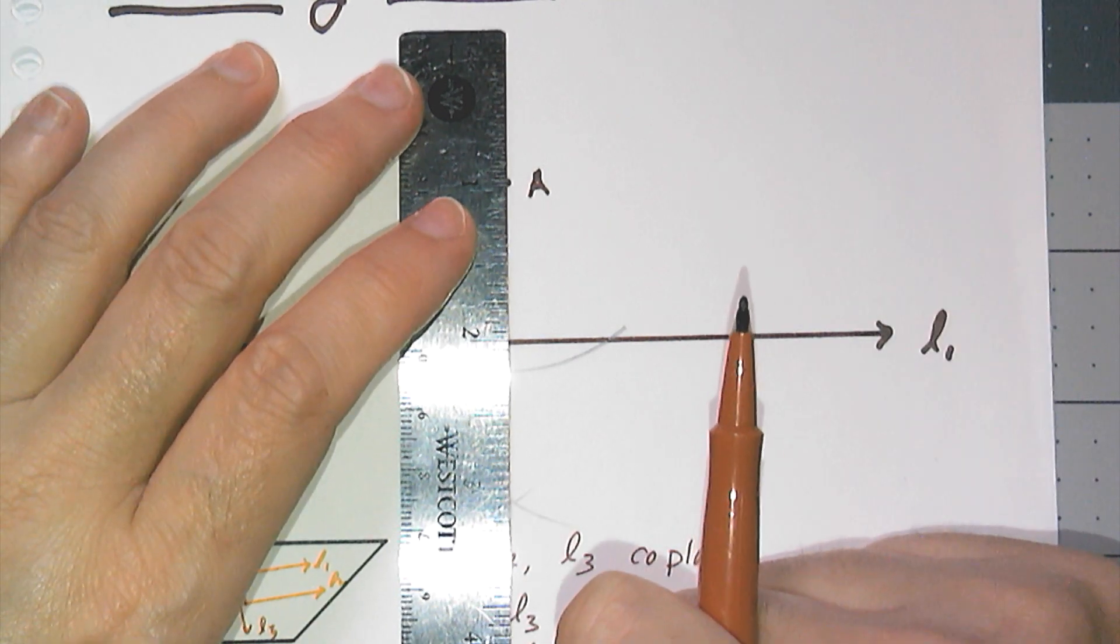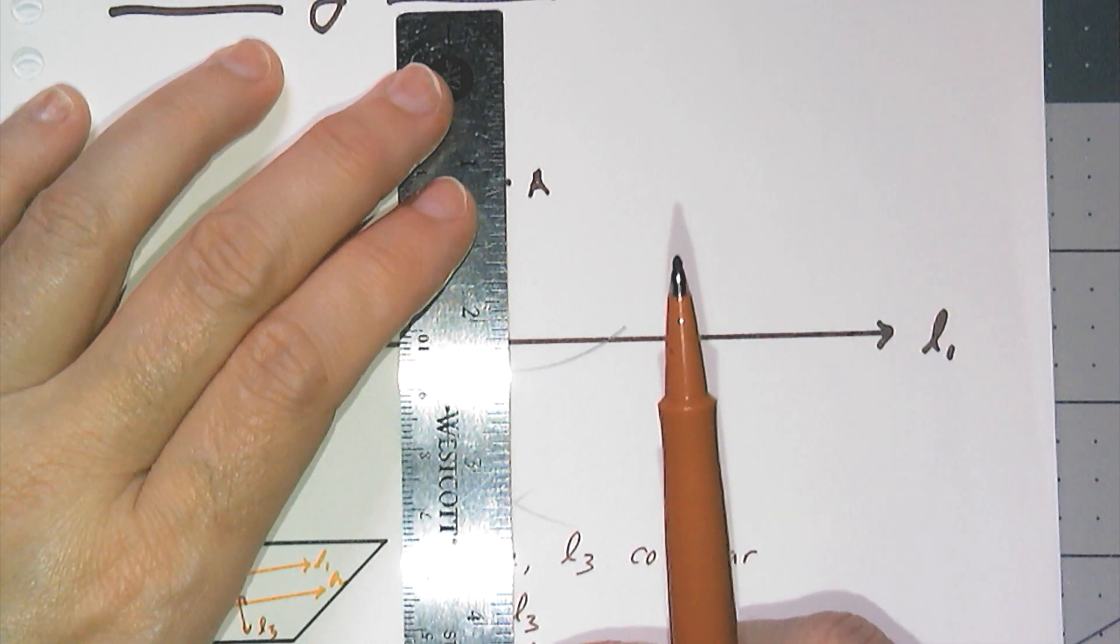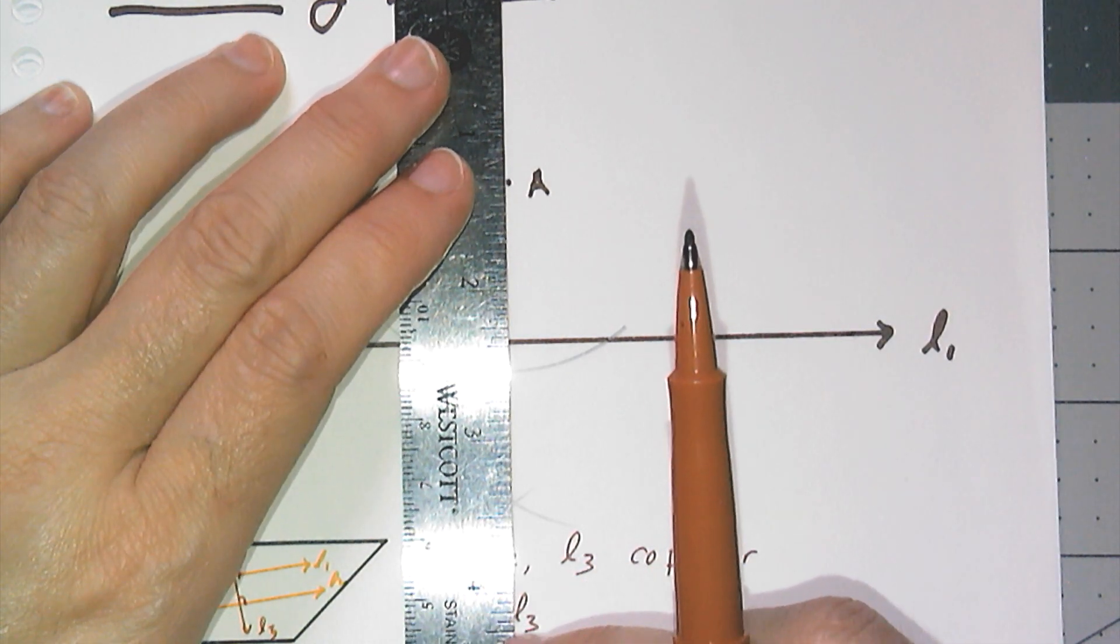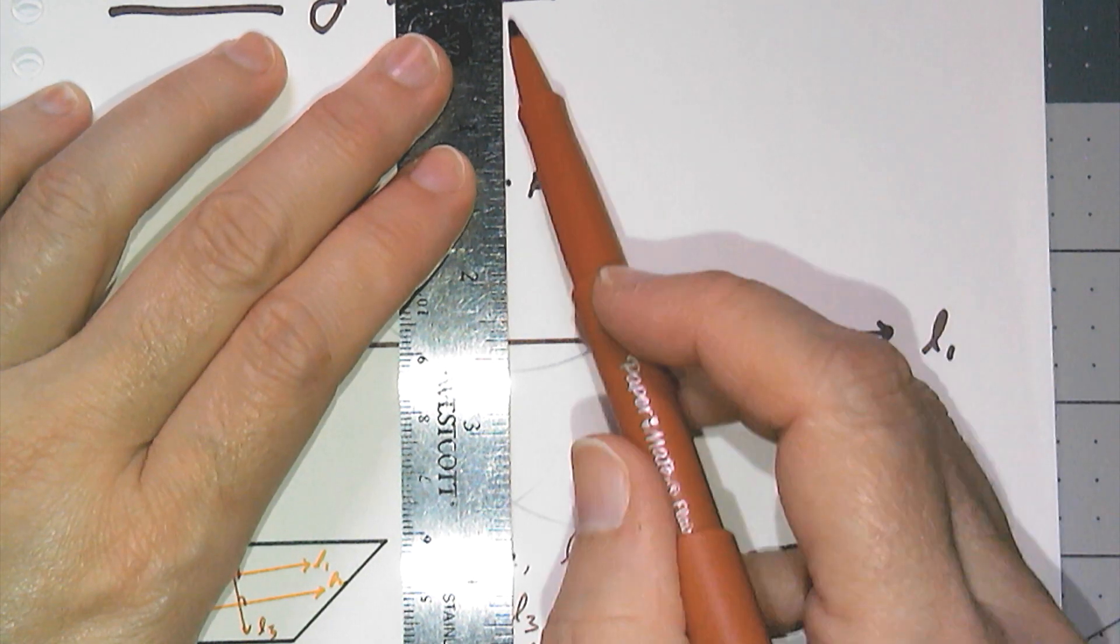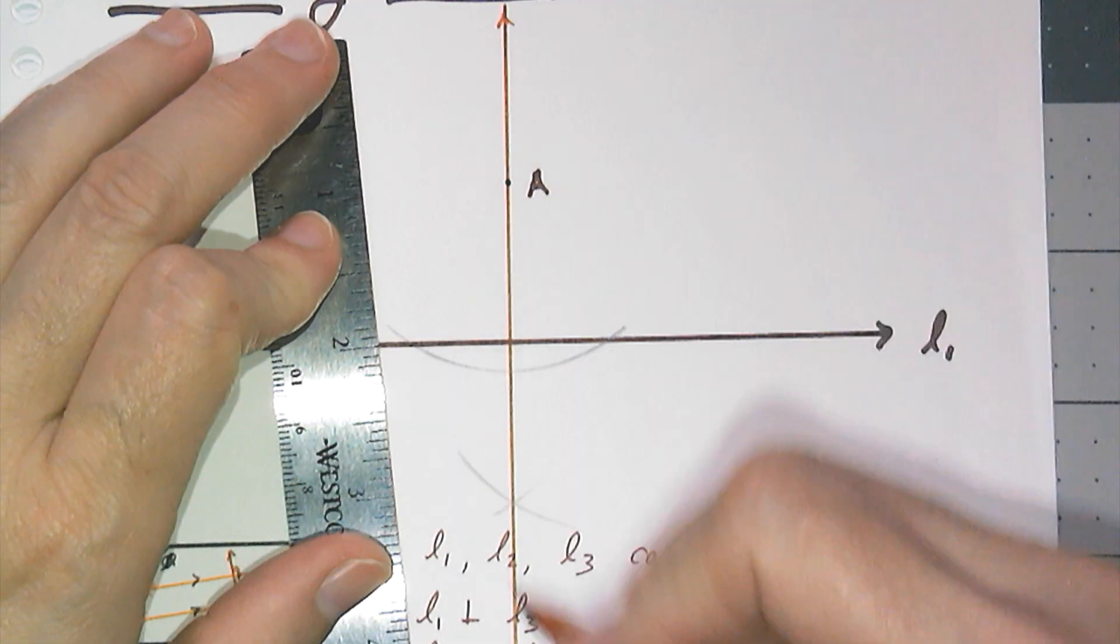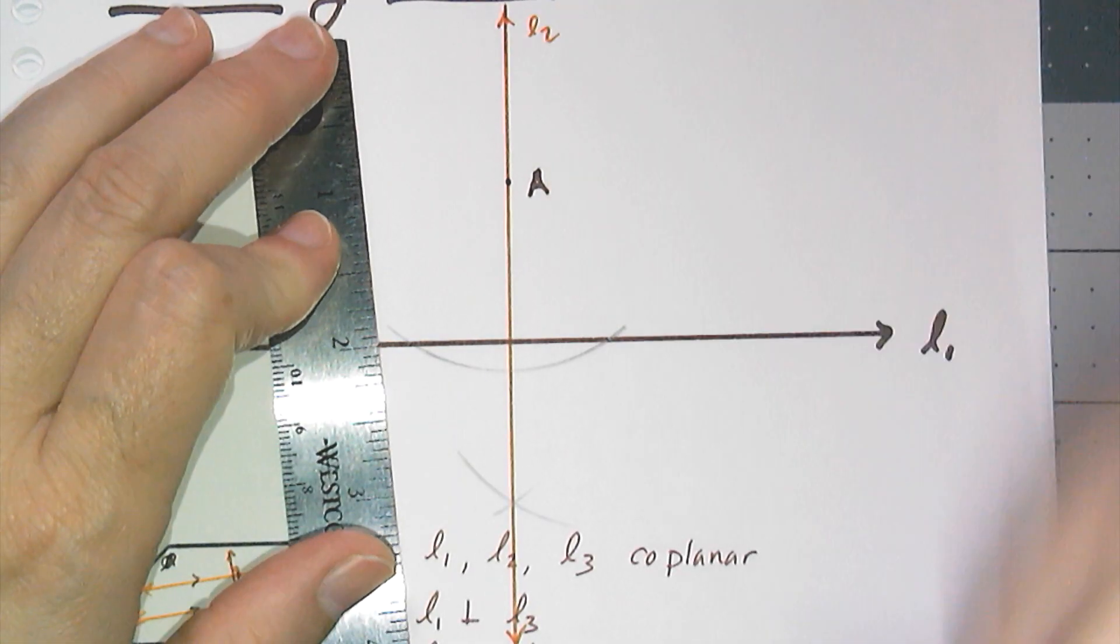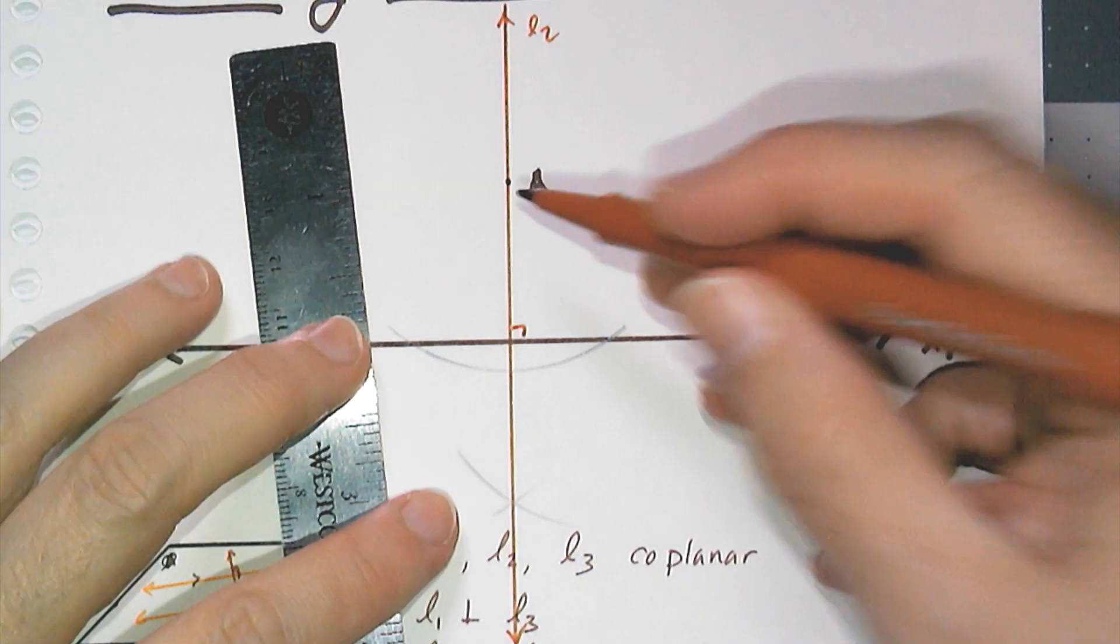I should have my perpendicular. I'm going to make it a little bit longer. I'm not going to have the line stop at point A. I'm going to extend past it because I need to do another construction. So now I have this line here, line two that I know is perpendicular to line one, and it goes through point A.